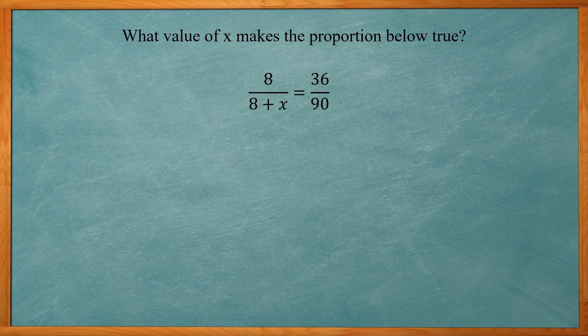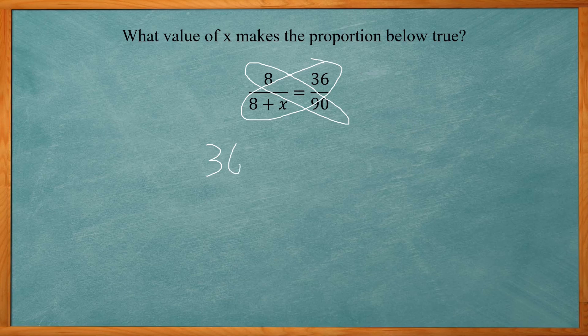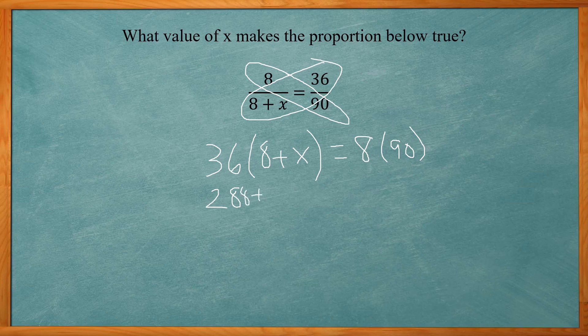So this problem reads what value of x makes the proportion below true. So again, all we have to do is do our cross multiplication. So we have 36 times 8 plus x equal to 8 times 90. Then if I distribute the 36, I get 288 plus 36x equal to 720.